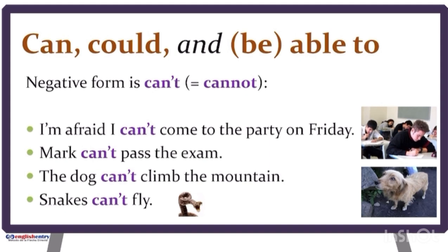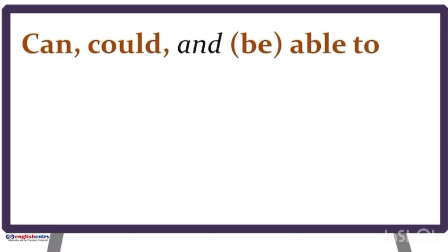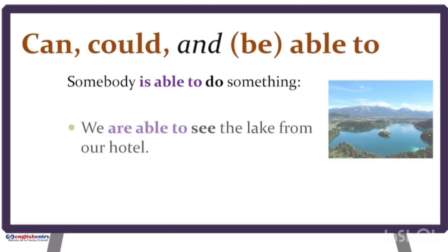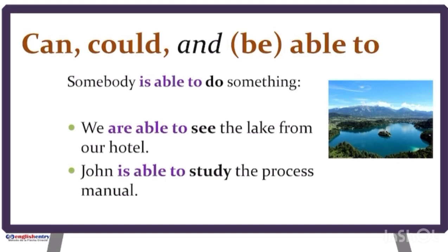You can also say that somebody is able to do something, but can is more usual. For example: We are able to see the lake from our hotel. John is able to study the process manual.